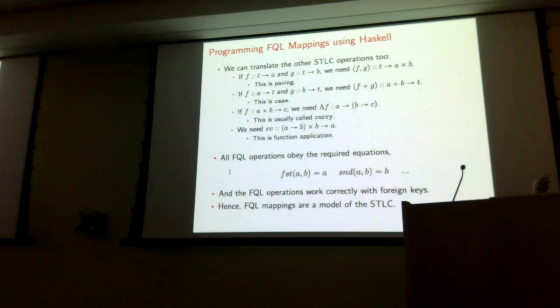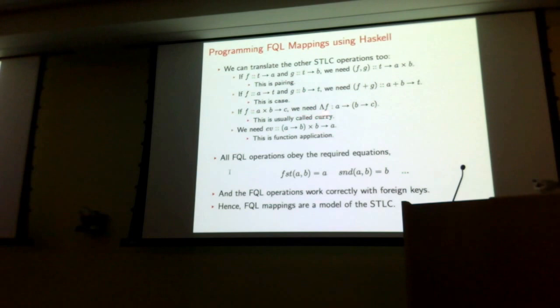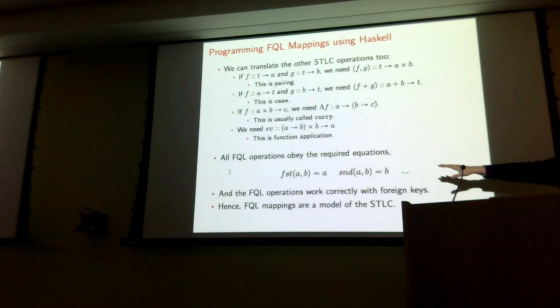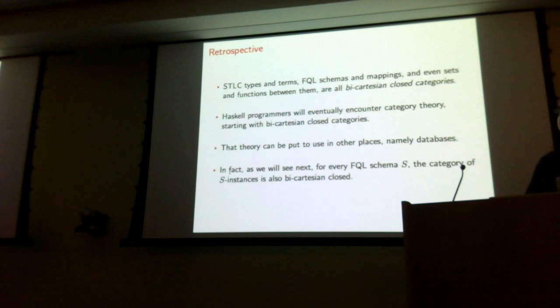I'm obligated to show that all the operations of the simply typed lambda calculus can be translated into FQL. I just showed you a few. For completeness, the others you need are: the ability to form pairs, the ability to do case statements, and operations for function types — curry and eval. We can create FQL analogs of each of these and prove they obey the required equations. Then you have a translation from simply typed lambda calculus types and terms to FQL schemas and mappings — meaning you can program in Haskell without recursion and equivalently program using this FQL IDE.